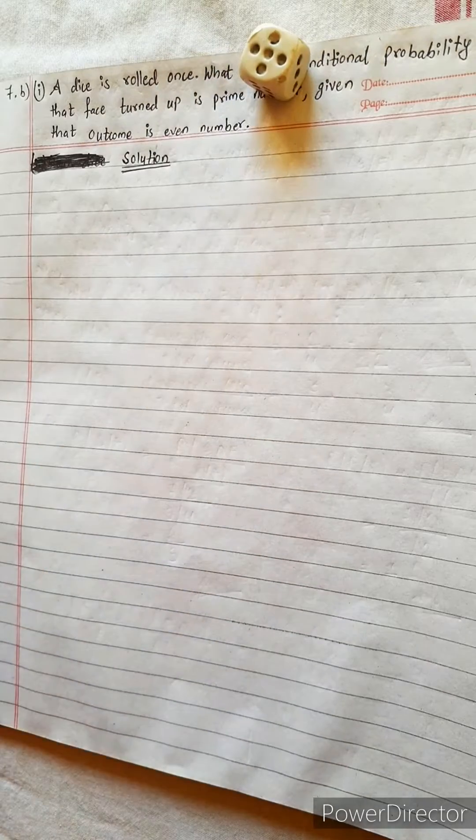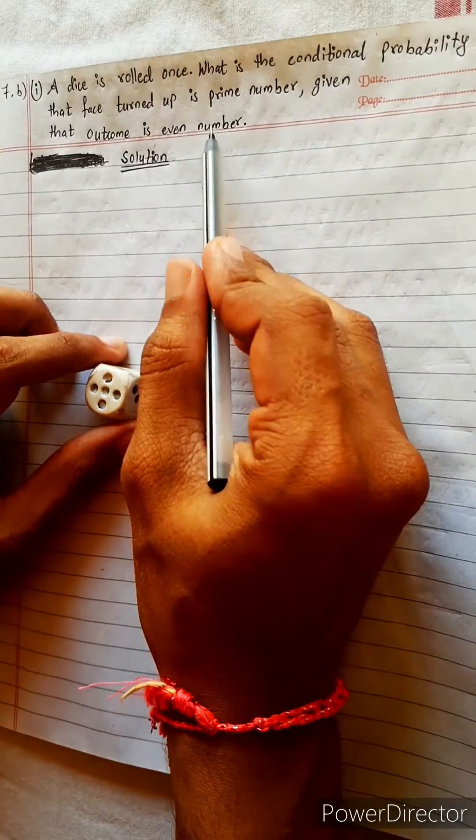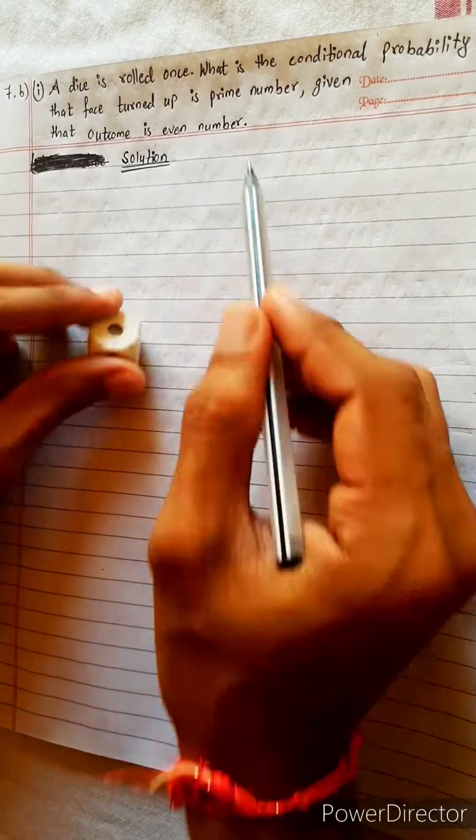A dice is rolled once. What is the conditional probability that the face is a prime number given that the outcome is an even number?